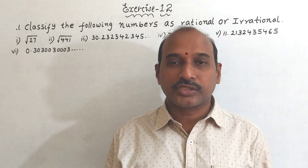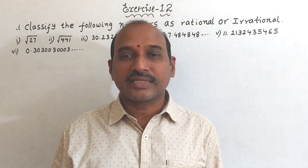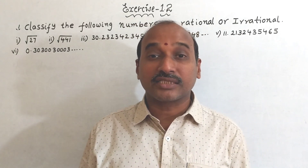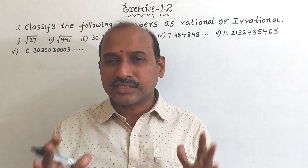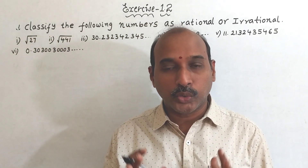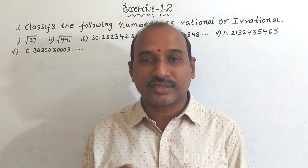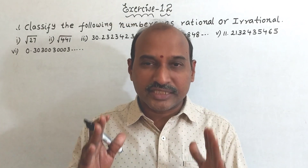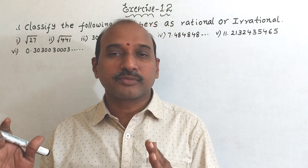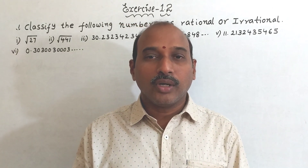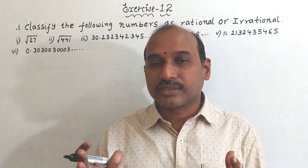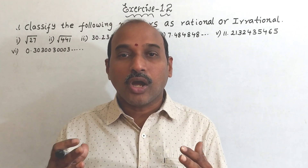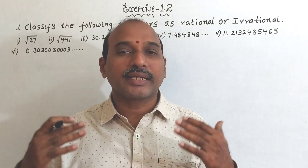Exercise 1.2, first question: classify the following as rational or irrational. In the introduction to real numbers, we covered what rational and irrational numbers are. Rational numbers are in the form p/q, where q is not equal to 0 and p and q are integers. In decimal form, terminating decimals and non-terminating recurring decimals are rational numbers. Numbers other than p/q form are irrational, and non-terminating non-recurring decimals are irrational numbers.